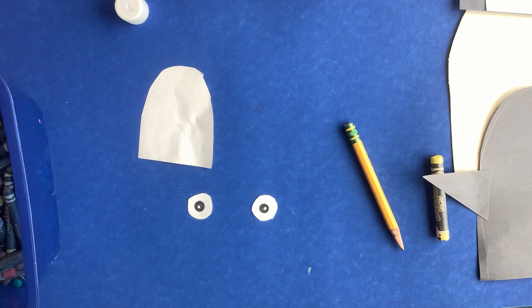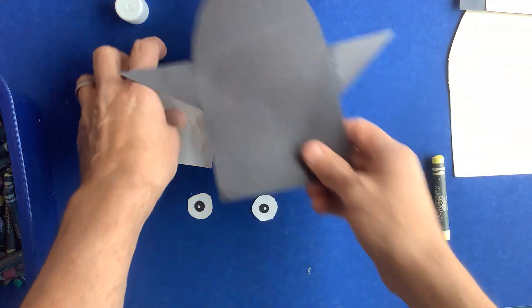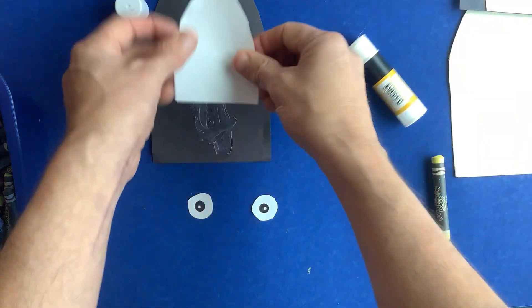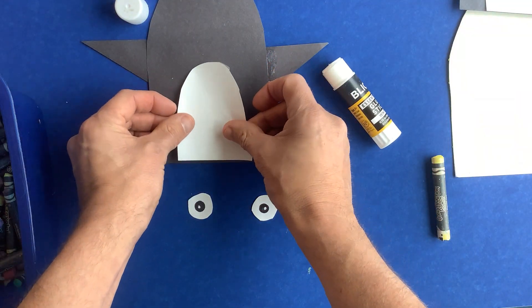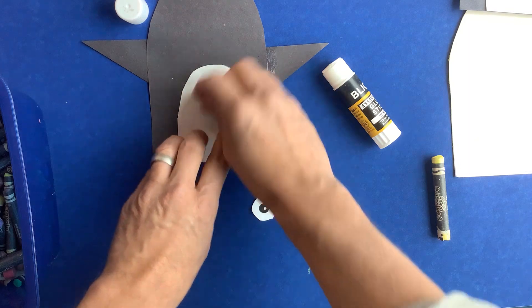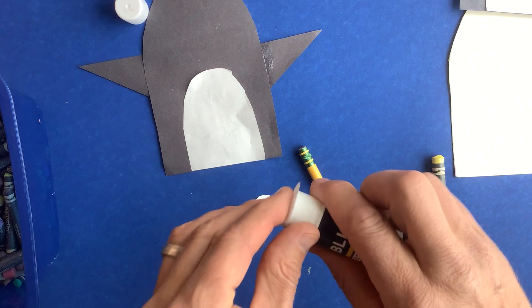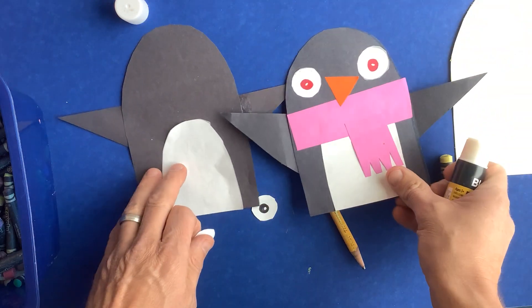My penguin is ready. I will glue down the belly, I'll line up those lines right there. Glue down the belly and then I'm gonna glue down the eyes near the top so I'll have room for my beak and my scarf.